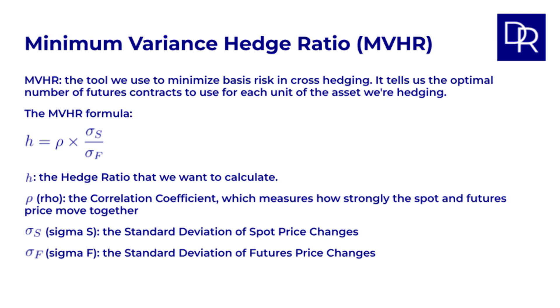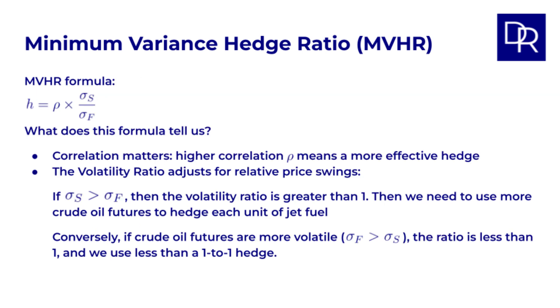Rho is the correlation coefficient. This measures how strongly the spot price of jet fuel and the crude oil futures price move together. Correlation of plus 1 means they move perfectly in sync, 0 means no linear relationship and negative 1 means they move perfectly in opposite directions. For effective hedging, we want a positive correlation. Closer to 1, the better. Sigma s is the standard deviation of spot price changes. This measures the volatility of jet fuel price changes. Sigma f is the standard deviation of futures price changes. This measures the volatility of crude oil futures price changes. Intuitively, what does this formula tell us?